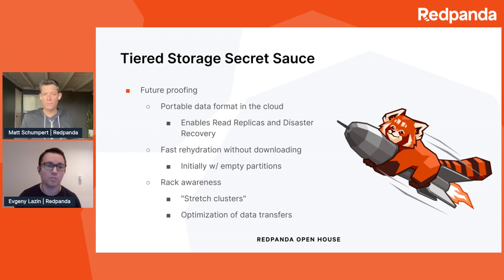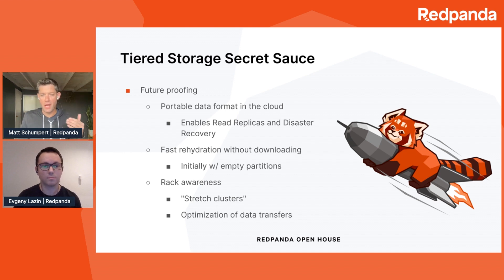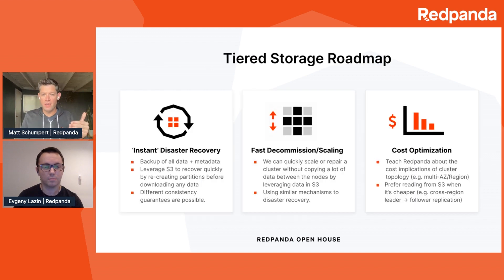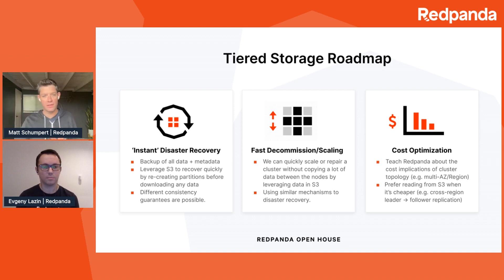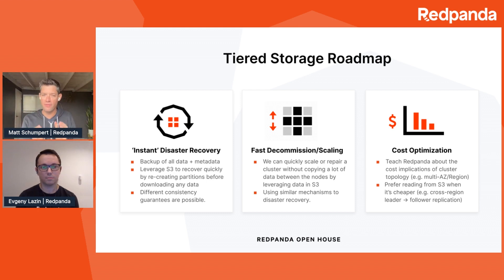So the portable self-contained format, fast hydration, and rack awareness are the core mechanisms that empower us to build a set of features going forward. Right now, you have individual topic recovery. But what we're adding is a push-button, instant disaster recovery feature for an entire cluster — all the metadata, offsets, everything you need to get back up and running instantaneously, without having to rehydrate all the data. Just create empty partitions and start streaming data out of cloud storage. That means you don't have to set up a separate cluster doing active-passive continuous replication, like mirror maker 2, costing twice as much. We can enable very close to zero RPO and very low cost disaster recovery, thanks to this fast rehydration.